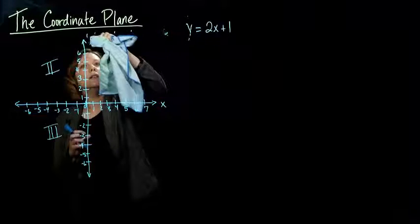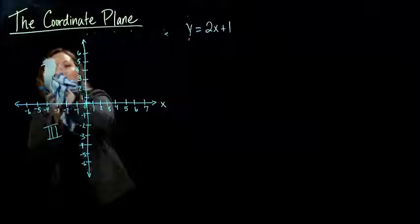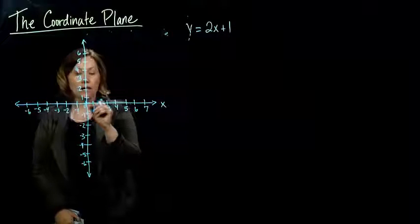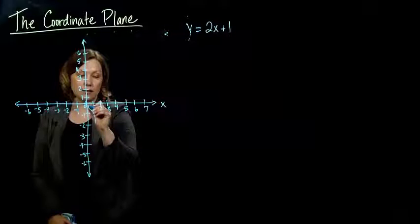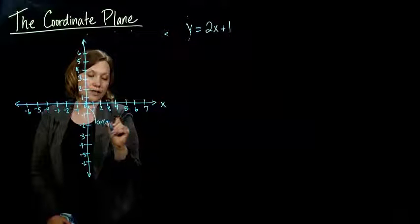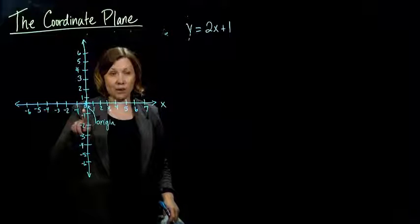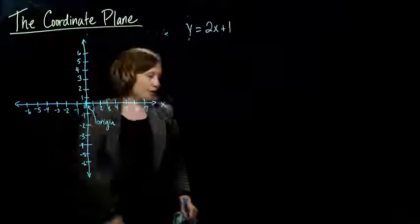So let's see if we can plot some points just to refresh. Oh, one last thing. The spot where both number lines cross is called the origin, right? So both number lines start there at zero. So the x is zero and the y is zero.